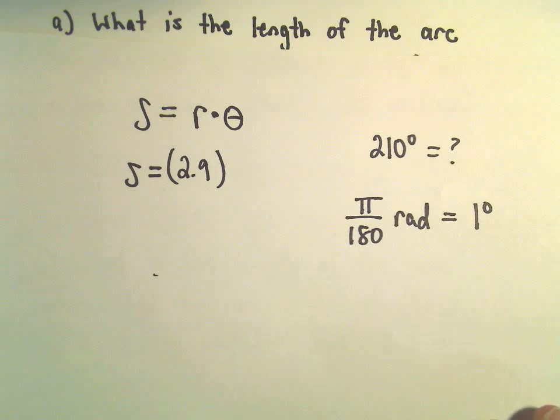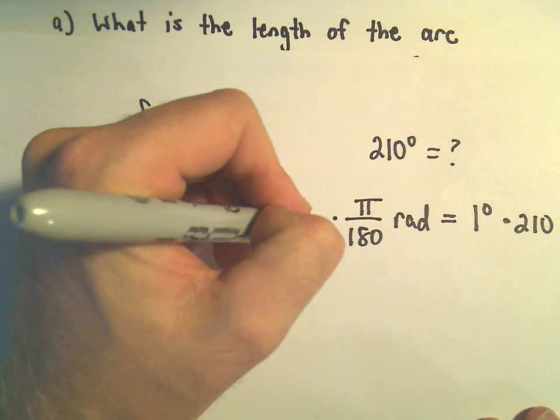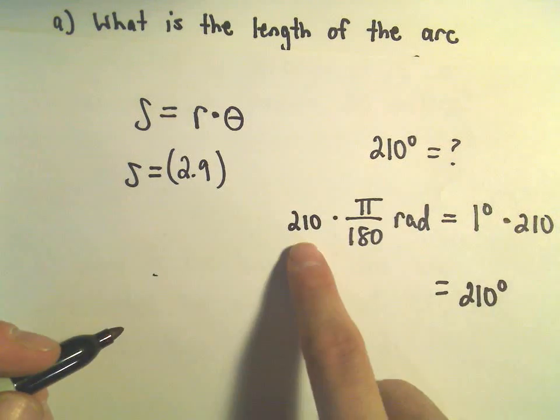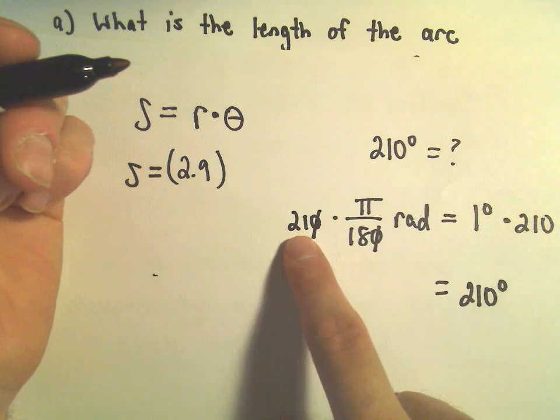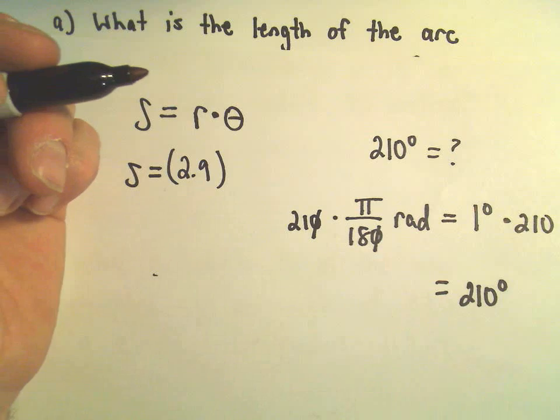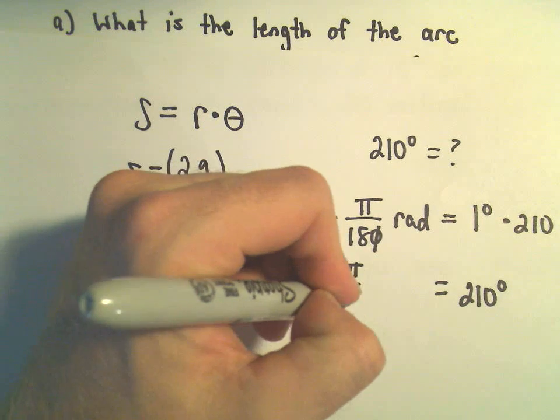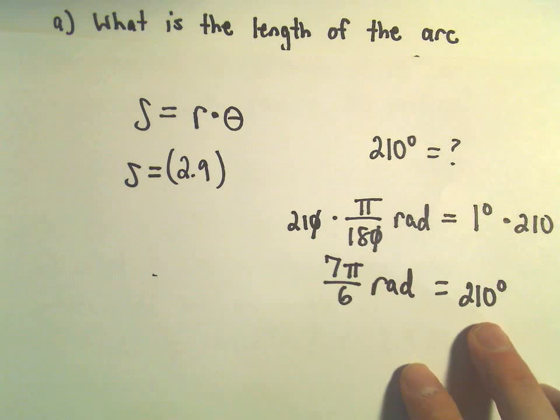So now we can simply multiply both sides by 210. So we'll have 210 degrees on the right. Let's see, we can just cancel out the zeros. The biggest number that will go into 21 and 18, I believe, is 3, so we'll get 7 pi over 6 radians. That'll be the same thing as 210 degrees.